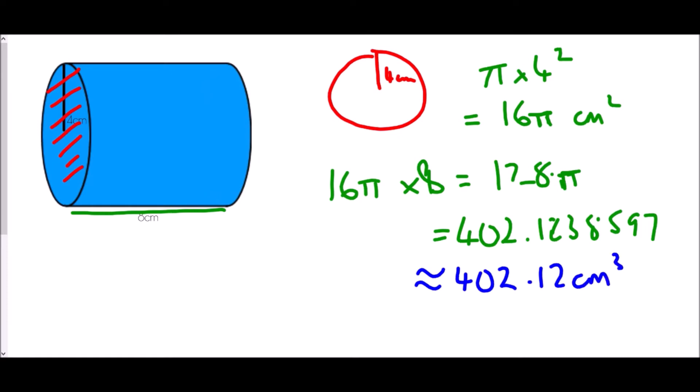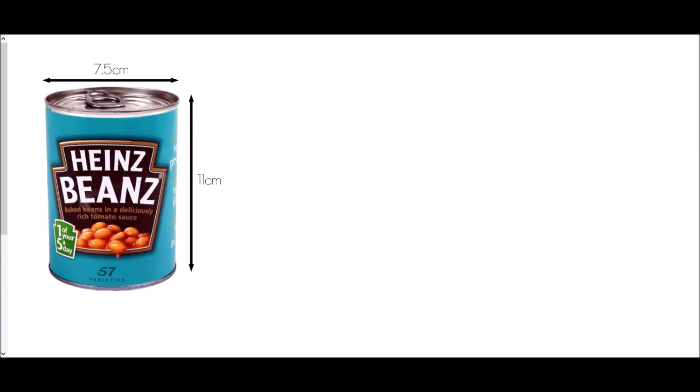It's still exactly the same process — area of the cross section first, then multiplied by the length. Next we have a tin of Heinz beans, and we've got all of the dimensions of that tin. It is a height of 11 centimetres, and then we have 7.5 centimetres. But in this case, what is the 7.5 centimetres representing?